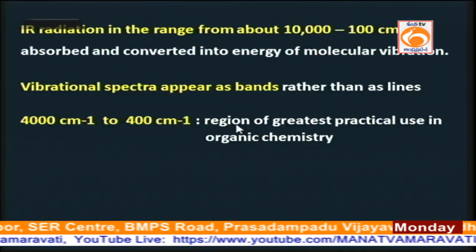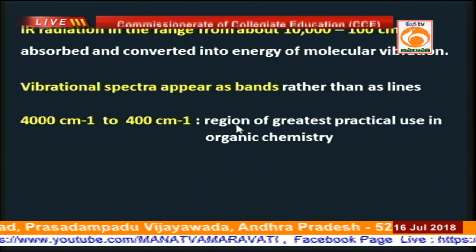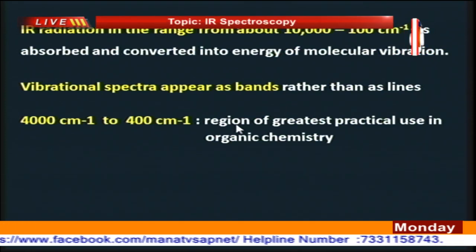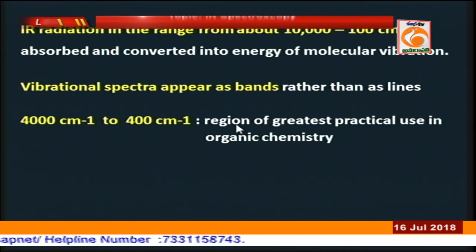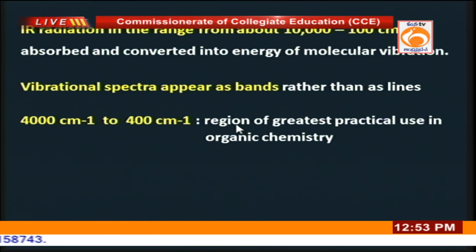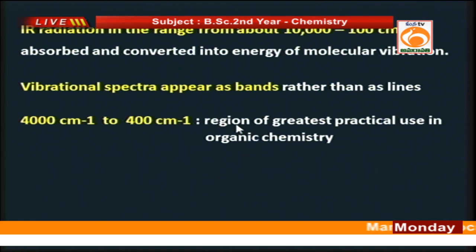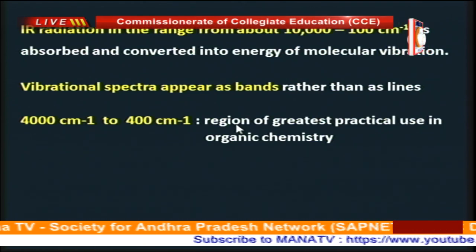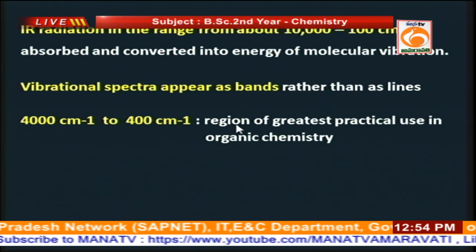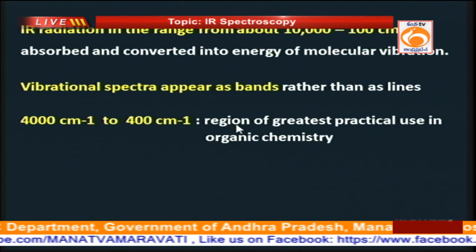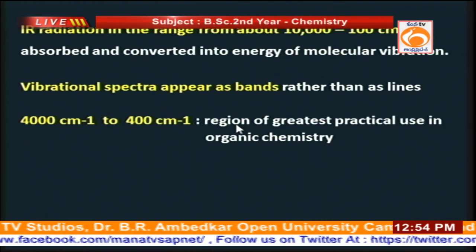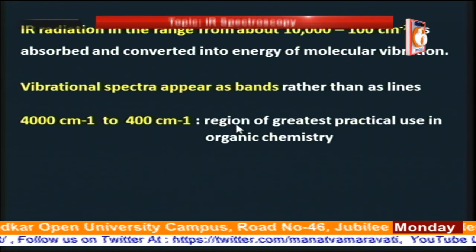IR radiation generally ranges from 100 cm⁻¹ to 10,000 cm⁻¹. In an IR spectrum we observe bands instead of lines, because each vibrational transition in a molecule contains several rotational lines — whenever a vibrational transition occurs it is accompanied by several rotational transitions. Therefore in vibrational spectra we get bands, each containing several lines. The important region for organic chemistry is 4,000 cm⁻¹ to 400 cm⁻¹, since almost all organic compounds give absorption peaks within this region.